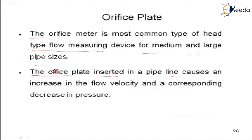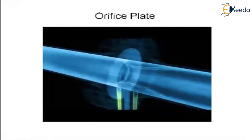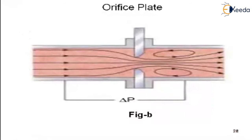The orifice plate is inserted in a pipe and causes an increase in flow velocity with a corresponding decrease in pressure. Here the velocity is increasing at the orifice, while the pressure is decreasing. The pressure before the orifice is P1, and after is P2. The difference P1 minus P2 is the differential pressure. The liquid flows in and passes through this throat section.